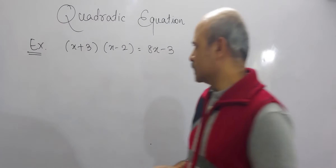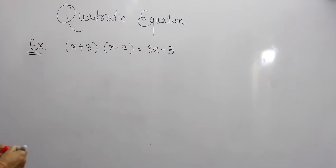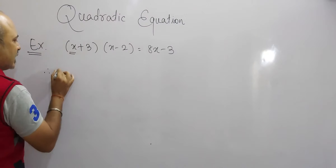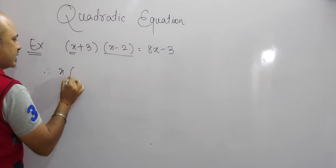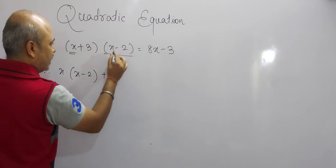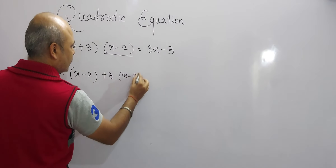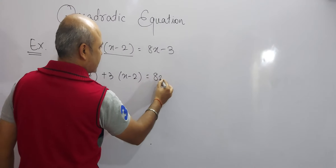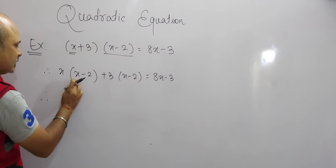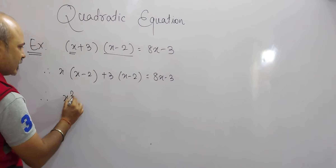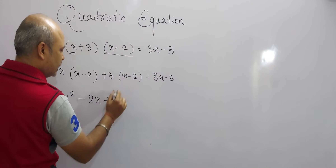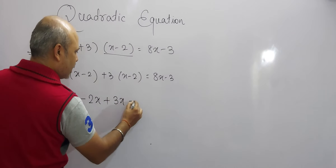So now let us start. We will take x and multiply the whole bracket x minus 2, then take plus 3 and multiply the second bracket x minus 2. This is equal to 8x minus 3. Therefore we will multiply: x into x gives x squared, minus x into 2 gives minus 2x, plus 3 into x gives 3x, minus 3 into 2 gives minus 6.